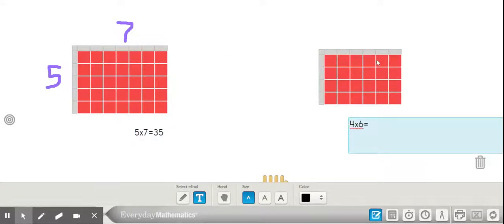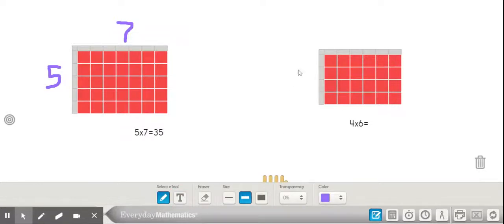Now looking over at my second array, you'll notice that in each column I have 1, 2, 3, 4, and across in a row 1, 2, 3, 4, 5, 6. I'm going to take my marker and label that, so I have 4 on my side and then I have 6 across.